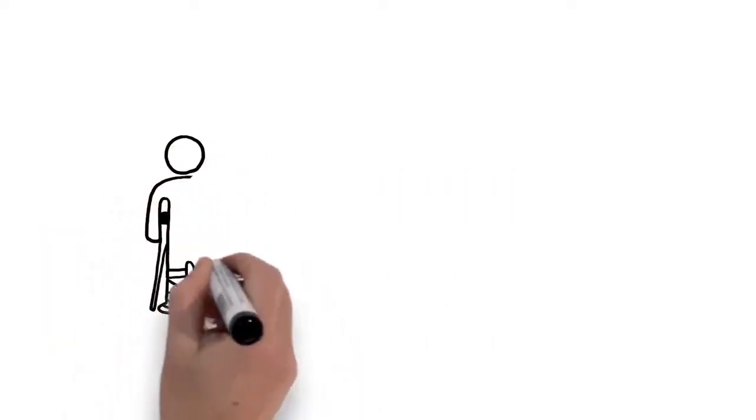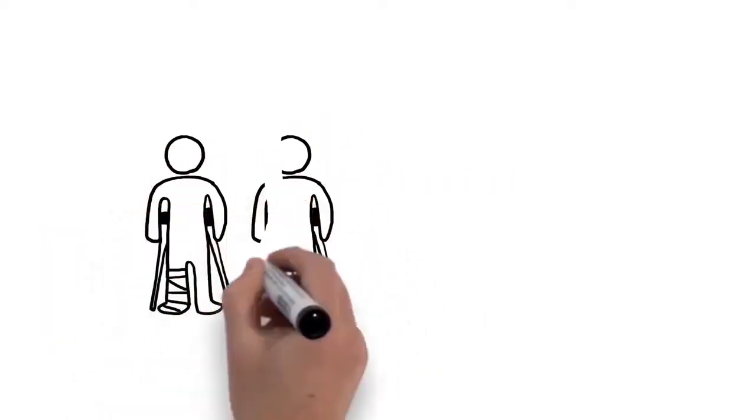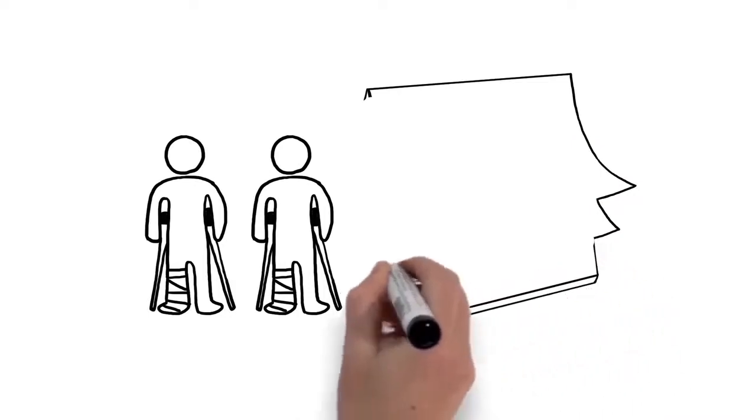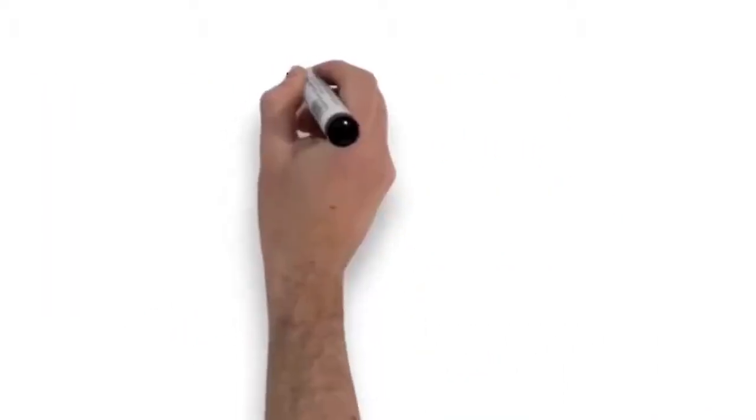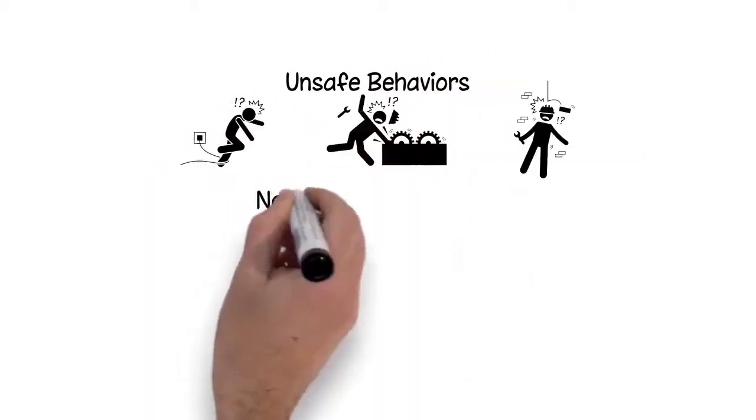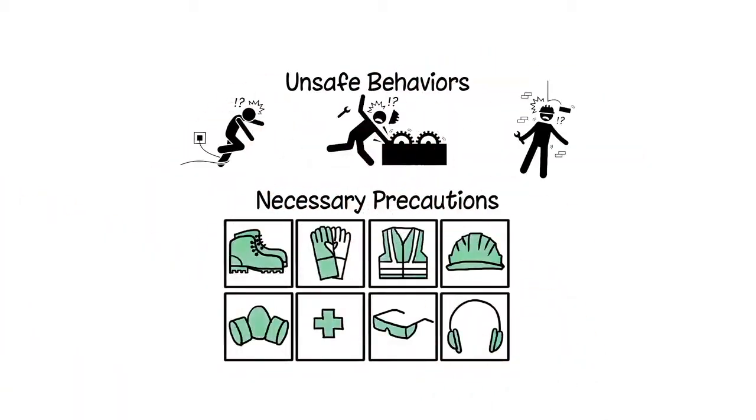Keeping employees safe is our number one priority at the RSCs, and the goal is to have fewer than two injuries per 100 employees during the year. With 95% of injuries coming from unsafe behaviors, supervisors will use behavioral-based safety observation techniques to make sure employees are taking the necessary precautions.